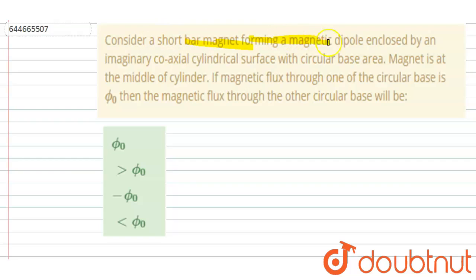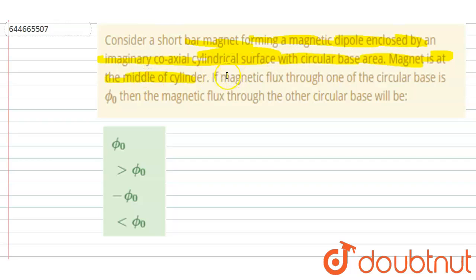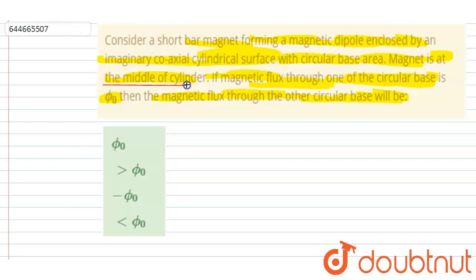Hello everyone. Consider a short bar magnet forming a magnetic dipole, enclosed by an imaginary coaxial cylindrical surface with circular base area. The magnet is at the middle of the cylinder. If the magnetic flux through one of the circular bases is φ₀, then what is the flux through the other circular base?